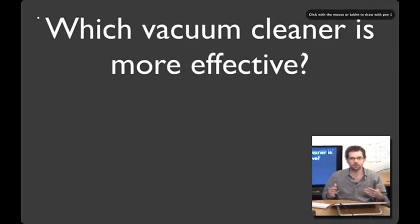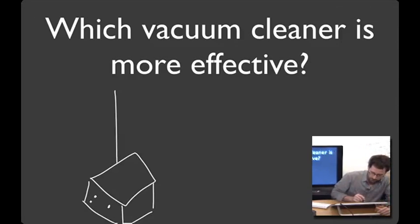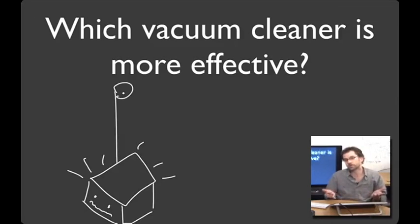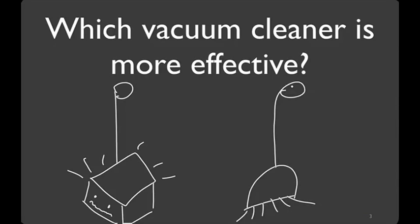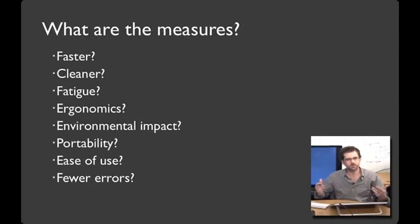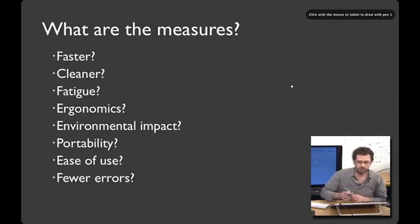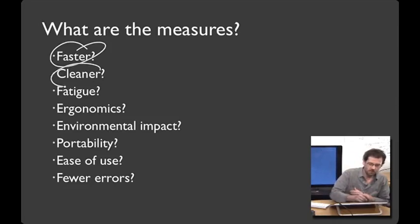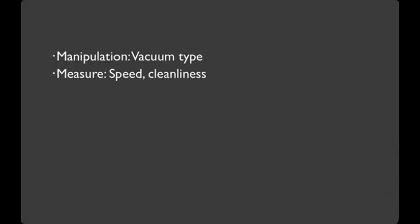In this study, we're going to compare a smart vacuum cleaner with a more traditional vacuum cleaner. As you remember from last time, one of the first questions we should ask about this are, what are the measures? Do we want something that is faster or cleaner or less fatigue, better ergonomics, lower environmental impact, portability, ease of use, fewer errors? Any of these are valid measures. You might even keep track of them all. For our example here though, we're going to pick two. We're going to go with faster and we're going to go with cleaner. So our manipulation is going to be vacuum type, and our measures are going to be speed and cleanliness.